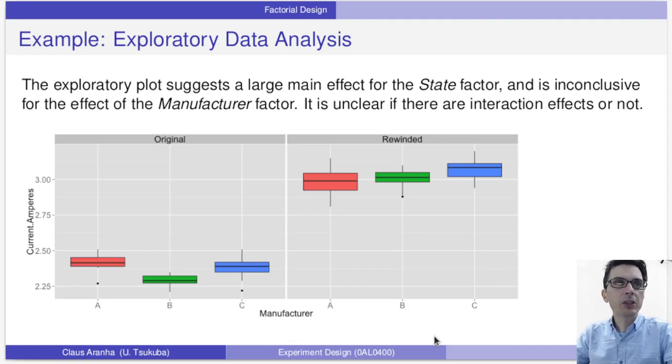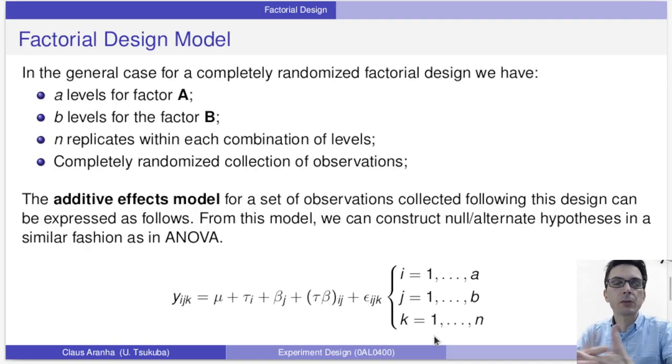So the plot suggests that there is a large main effect for the state, an inconclusive effect of manufacturer. It's unclear if we have interaction effects or not. So now we're going to do an analysis of these factors to try to identify whether we have main effects and secondary effects.